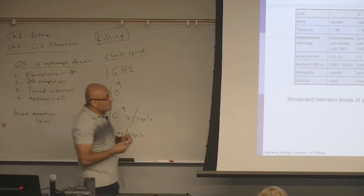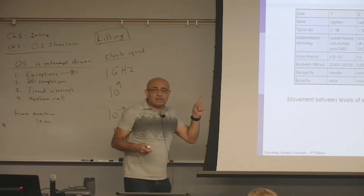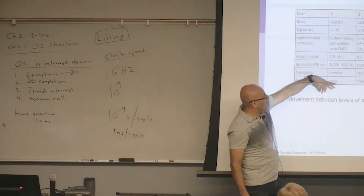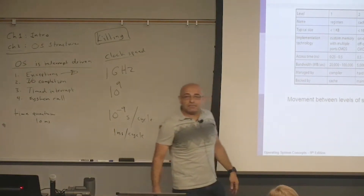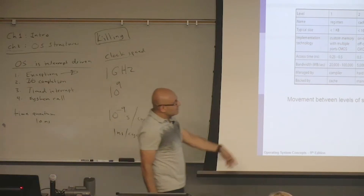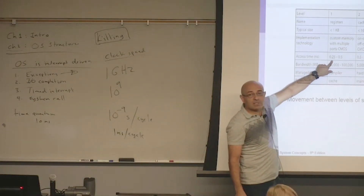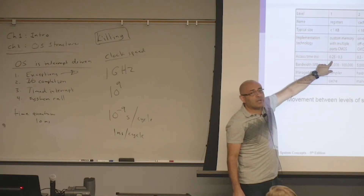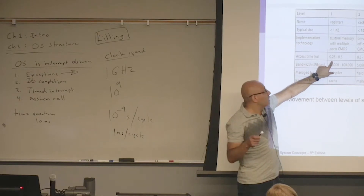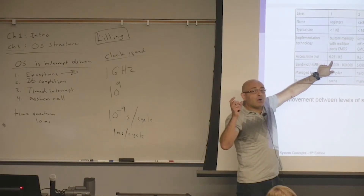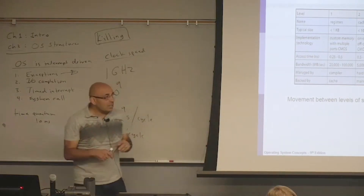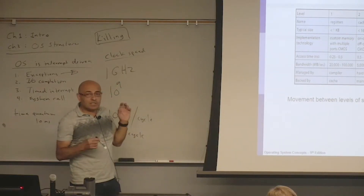Usually access to the register is done in one cycle. The cycle time ranges from 0.25 to 0.5 nanoseconds. So 0.25 nanoseconds corresponds to a clock speed of four gigahertz — since one nanosecond is one gigahertz, a quarter-nanosecond cycle means four gigahertz. Just so you have a feel for what these numbers mean.